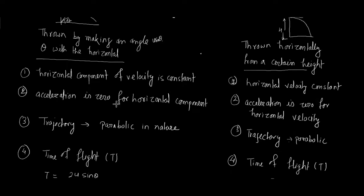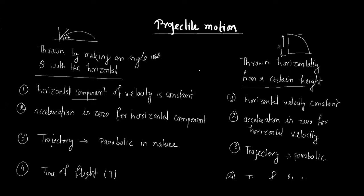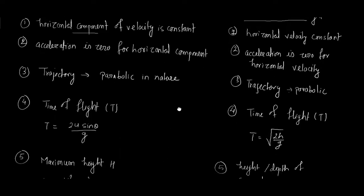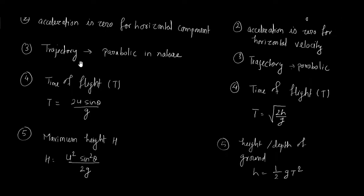In both cases, the horizontal component of velocity is always constant. However, the vertical component changes at each point because of acceleration due to gravity. The acceleration is zero for the horizontal component — this is well known. Point three: the trajectory, meaning the nature of the path followed by the projectile, is parabolic in both cases.